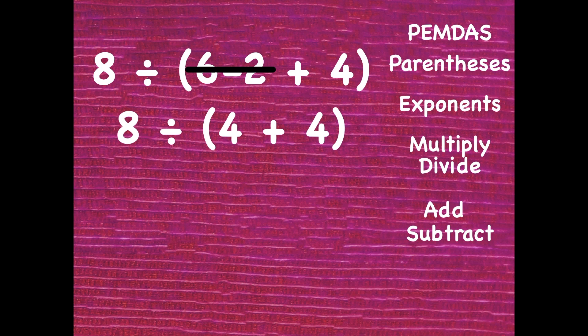We have 8 divided by 4 plus 4 in parentheses. So we still have something to do in parentheses. And that's what we'll do. 4 plus 4 is 8. Bring the rest of the problem straight down keeping it in the same order. 8 divided by 8 is 1. 8 divided by parenthesis 6 minus 2 plus 4 parenthesis is a really long and drawn out way of saying 1. Isn't 1 a lot simpler.